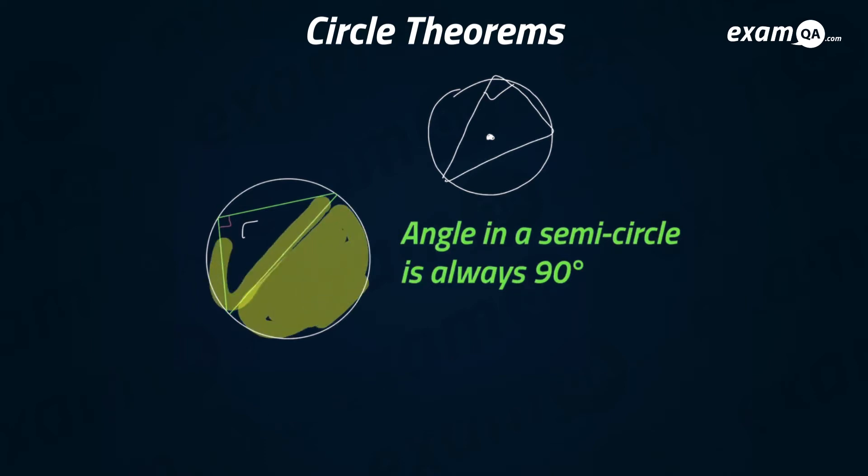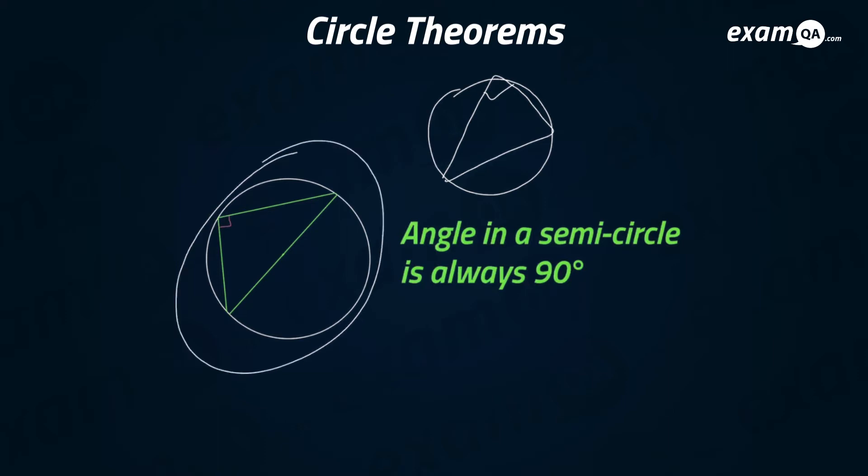That's one semicircle, that's the other semicircle. Be very careful with that. But in this case, this angle would be 90 degrees if you have a triangle in a semicircle. Let's go to the next one.